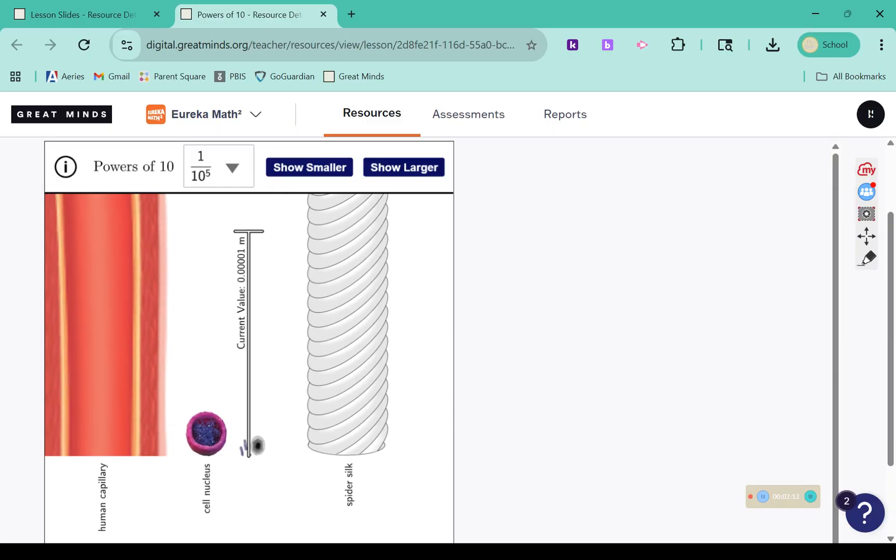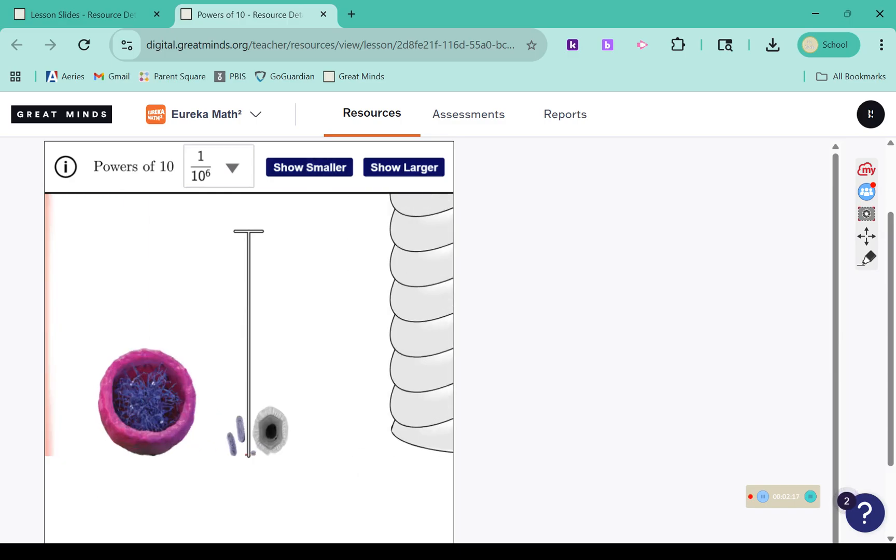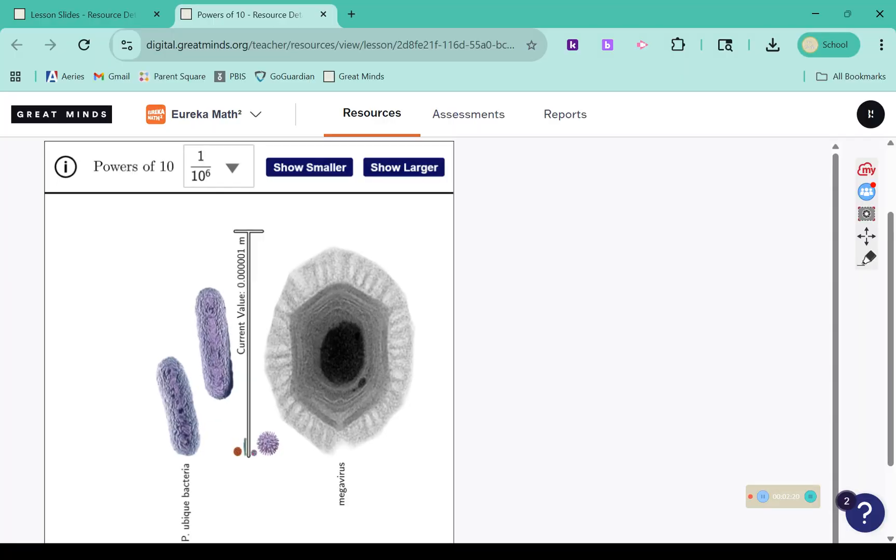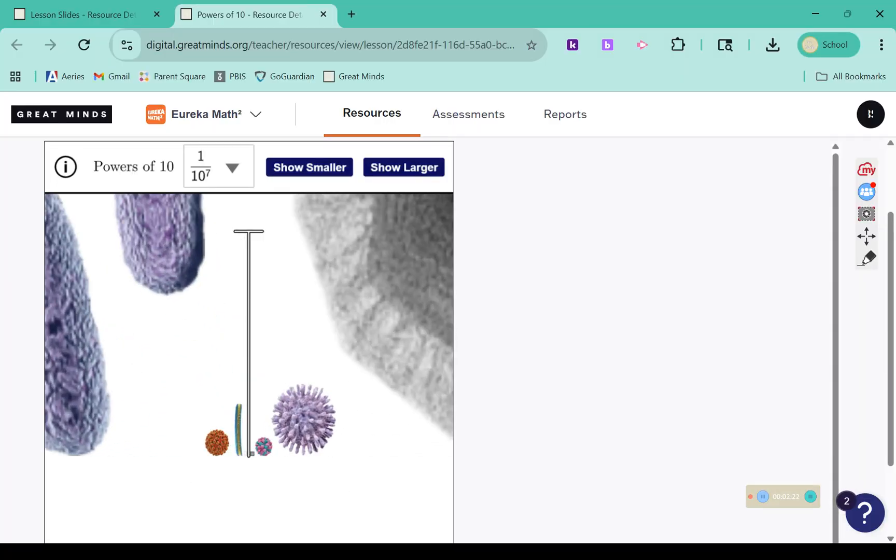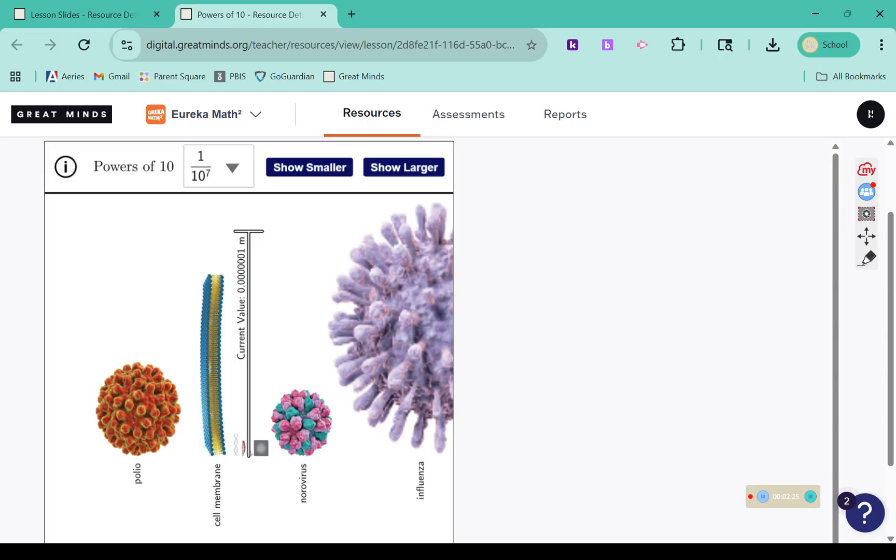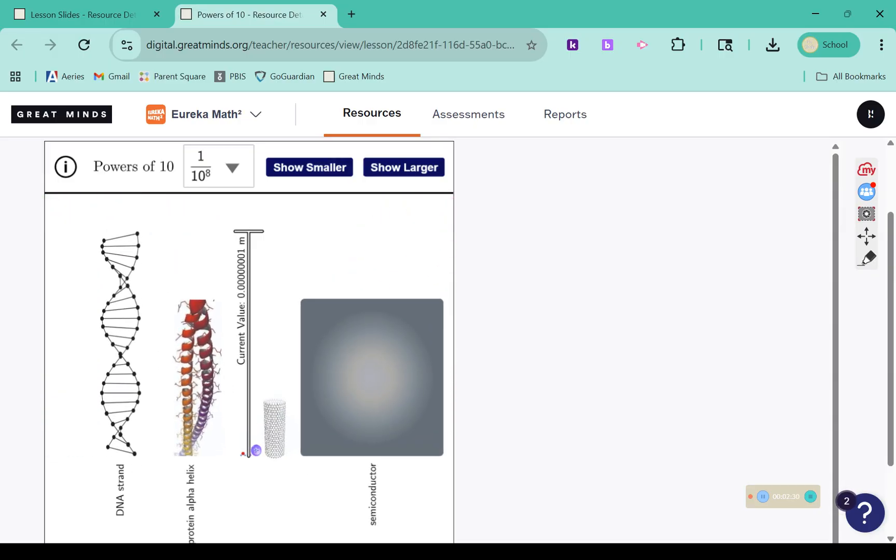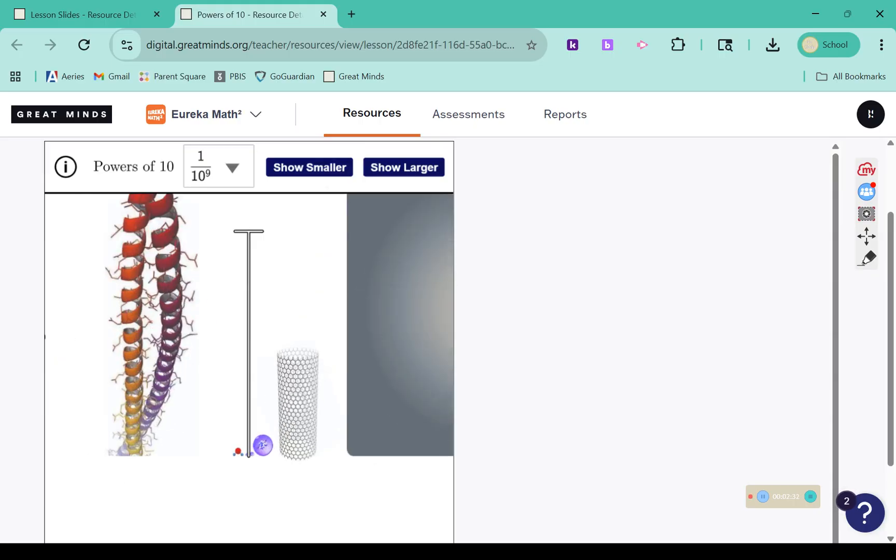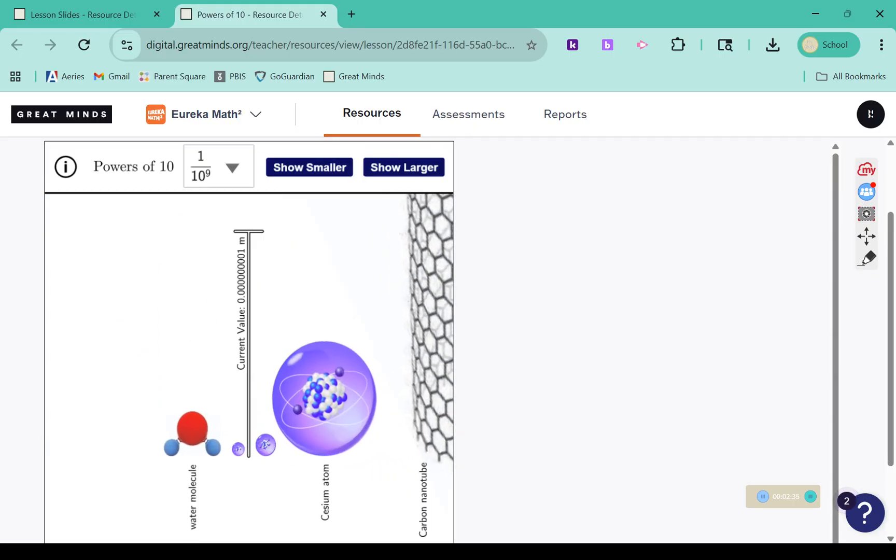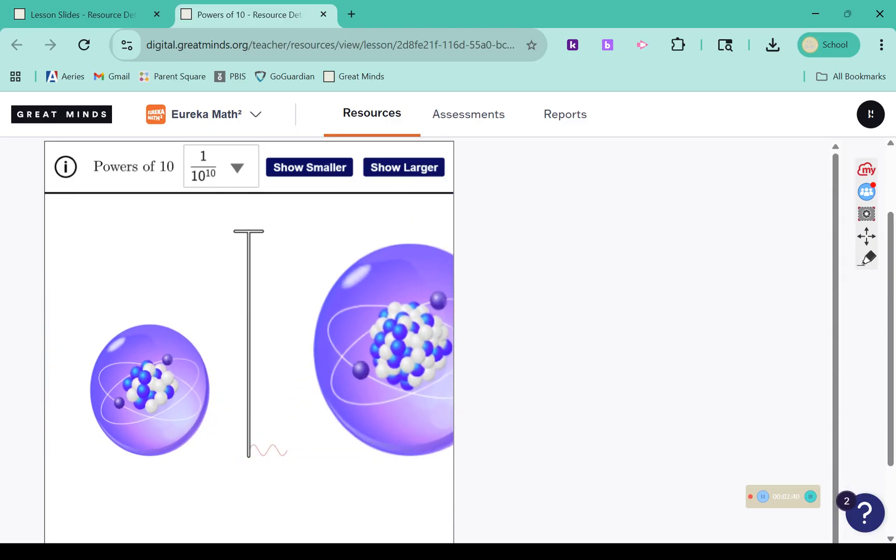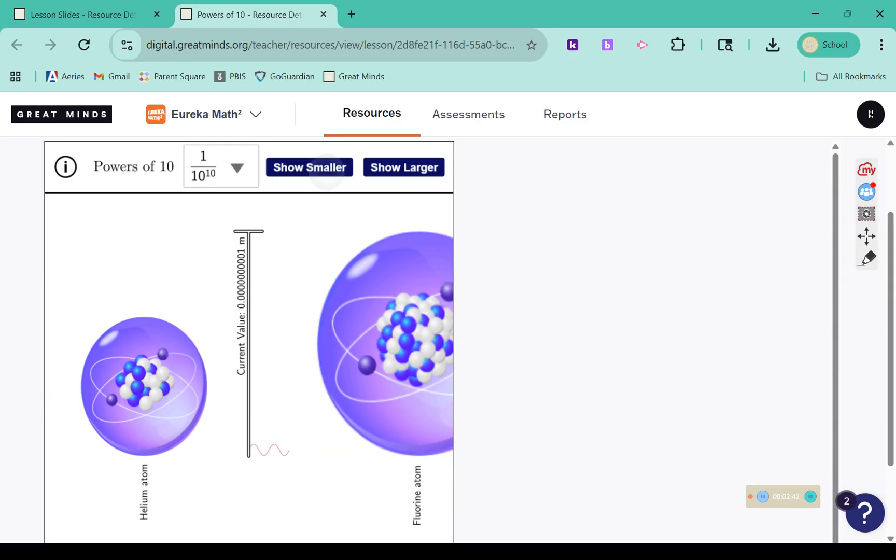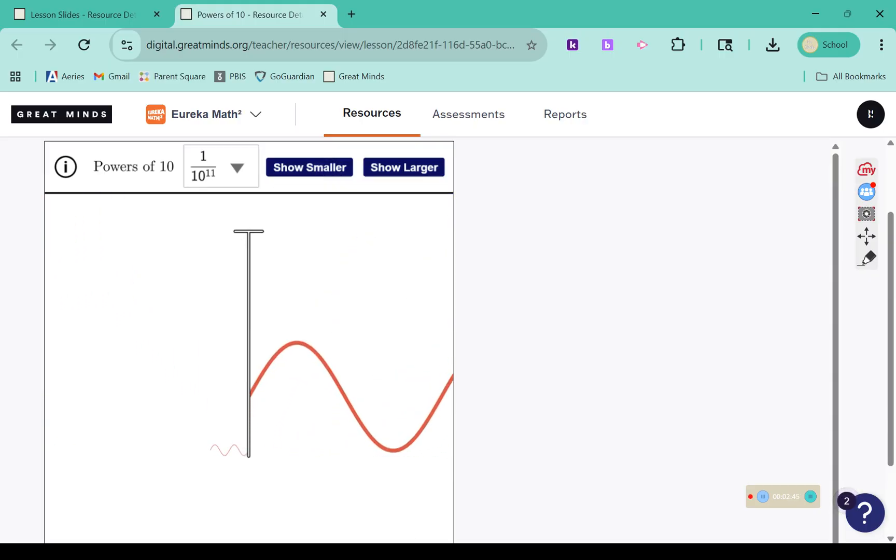And by 1 over 10 to the 5th, we're already about the size of a cell nucleus, down to a DNA strand. And now we're seeing rays.